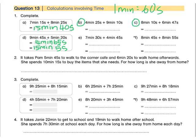Press pause to complete E and F by yourself now. Let's look at question 2. It takes Pam 5 minutes and 45 seconds to walk to the corner cafe and 6 minutes and 20 seconds to walk home afterwards. She spends 10 minutes and 15 seconds to buy the items that she needs. For how long is she away from home?